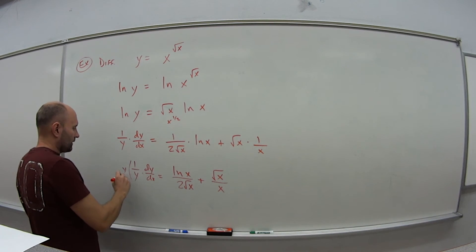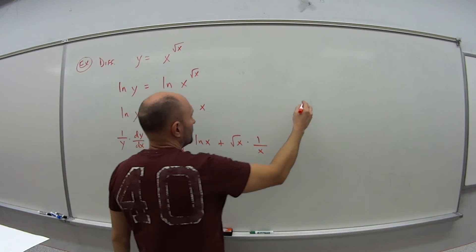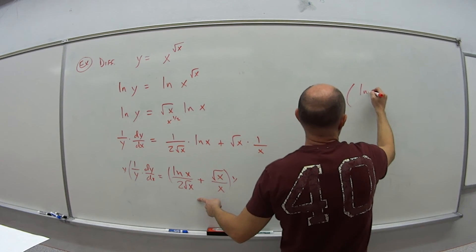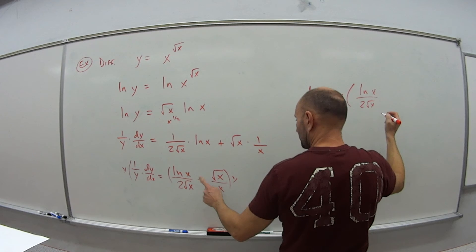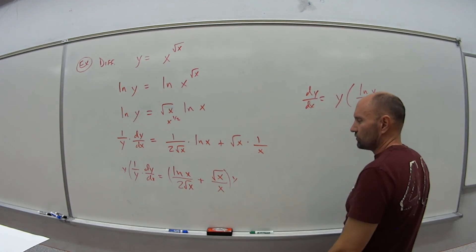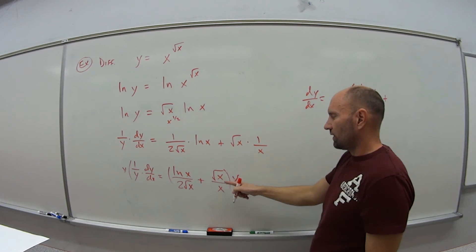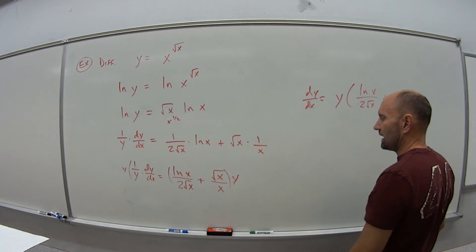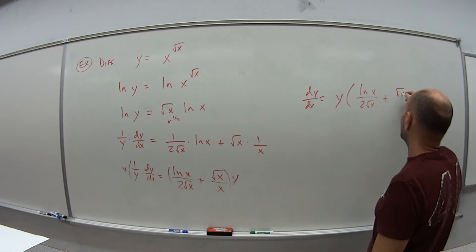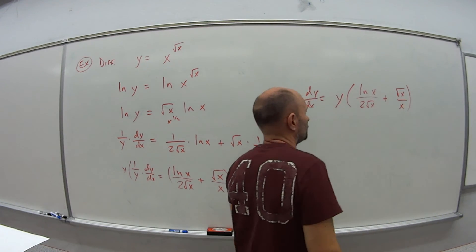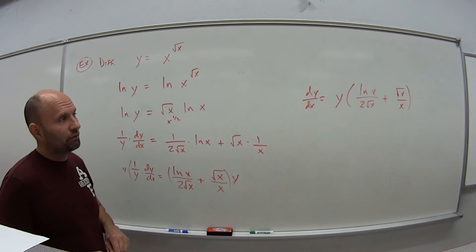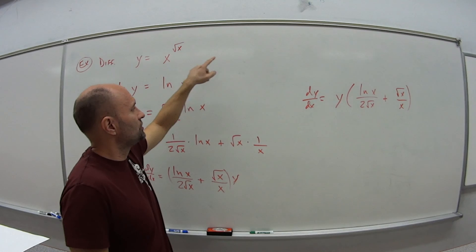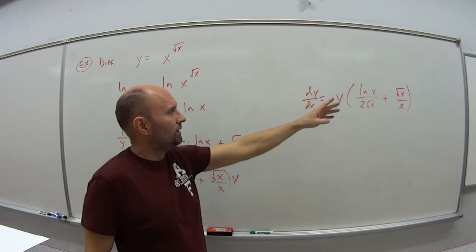To get dy/dx by itself, multiply both sides by y. So dy/dx equals y times the quantity natural log of x over 2 square root of x, plus square root of x over x. You could simplify that second term — square root of x over x is x to the half over x to the one, which gives x to the negative half, or 1 over square root of x — but many instructors won't require that level of simplification, so leaving it as is should be fine.